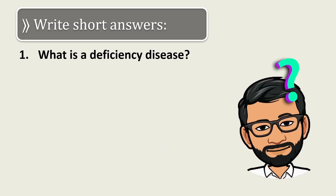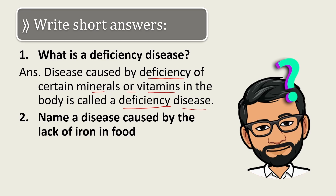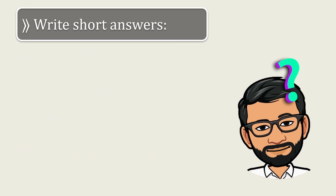Short answers: what is a deficiency disease? A disease caused by the deficiency of certain minerals or vitamins in the body is called a deficiency disease. When certain minerals or vitamins are absent in our body, we call that a deficiency disease. Second question: name a disease caused by lack of iron in food. The answer is anemia, which is caused by lack of iron in food.